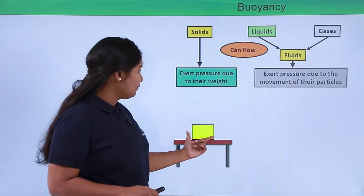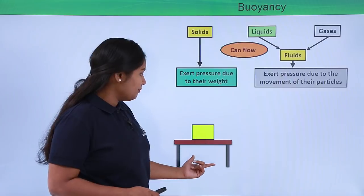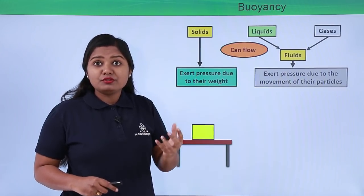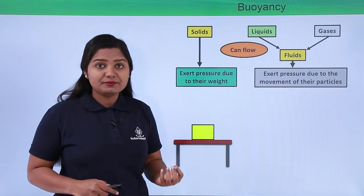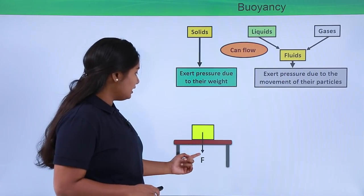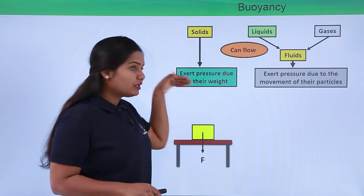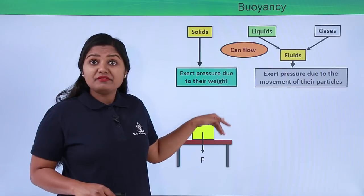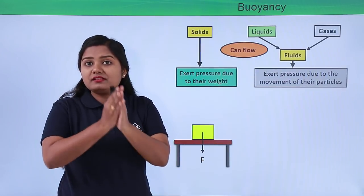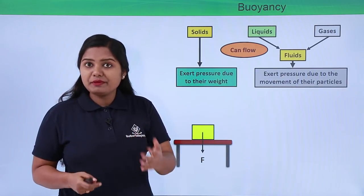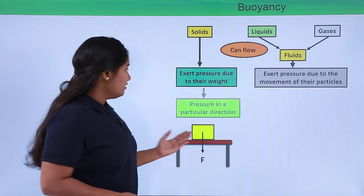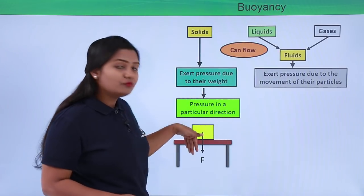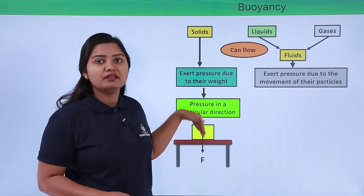Let's say we have a block or an object on a table, and this block has some weight. The weight is due to the gravitational pull of the earth, which is directed in the downward direction. So this object must be exerting pressure in the downward direction on the table. From here we can conclude that the pressure a solid exerts has a particular direction — in this case, the pressure is exerted downward, in the direction of the force.